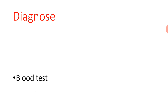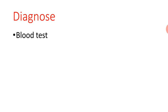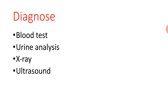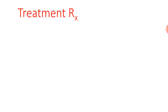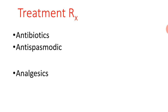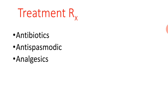Diagnosis includes blood test, urine analysis, X-ray, pelvic ultrasound, and cystoscopy. You can treat cystitis with antibiotics, antispasmodics, and analgesics.